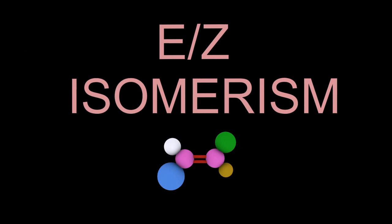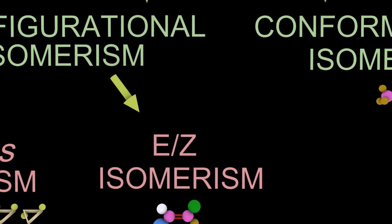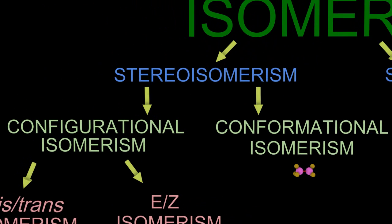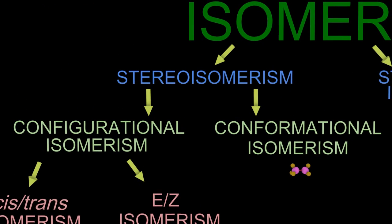A more complicated cis-trans situation, where you can't easily work out what's happening because there are many different groups, is called E/Z isomerism.